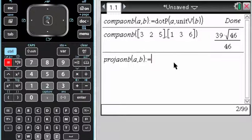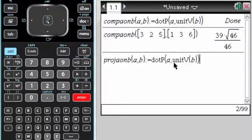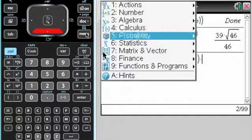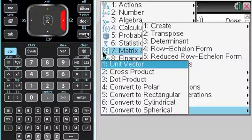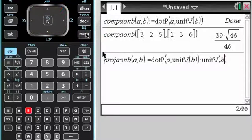I'm going to just enter it again here. Actually, I'm just going to copy that because I've already typed it in, times, and then I want the unit vector of B again. So here, vector, unit vector, and B.